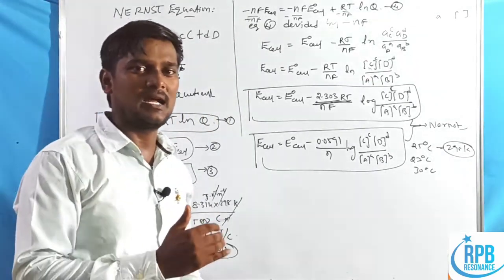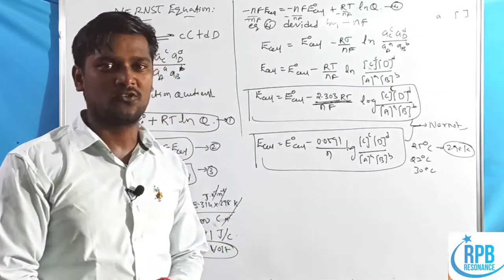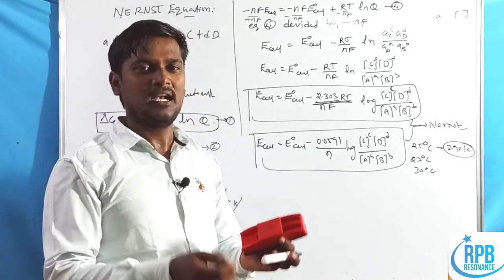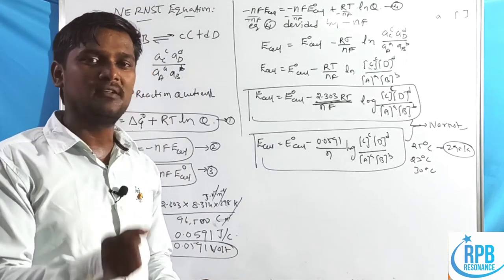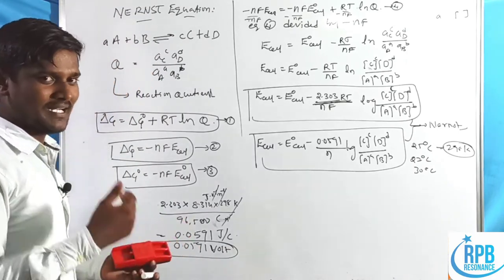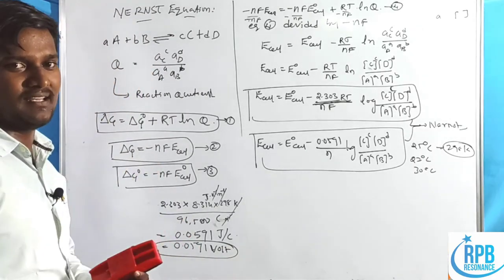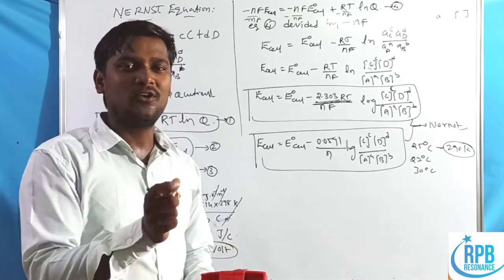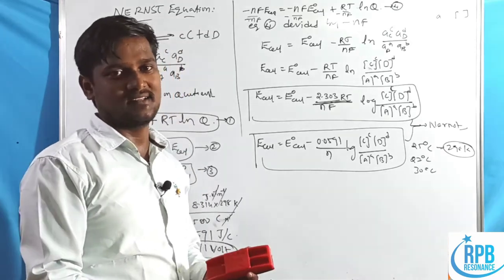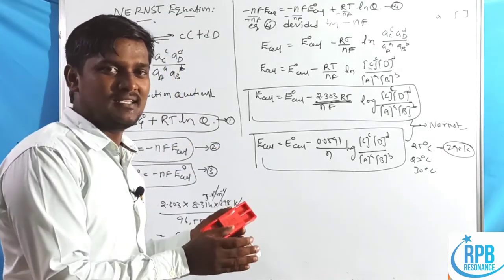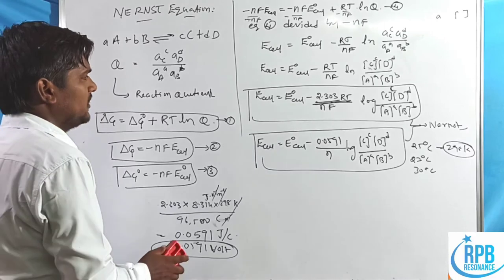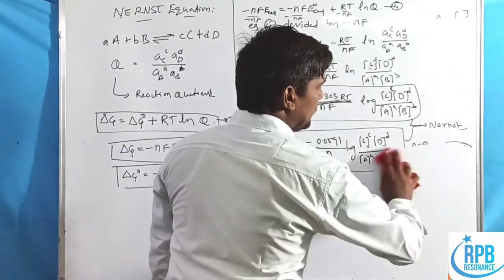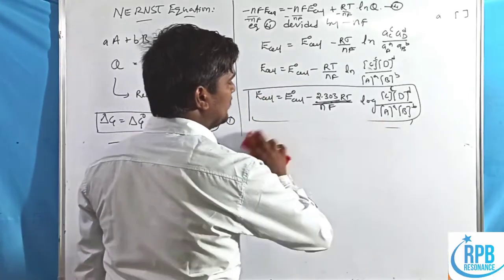This is the final representation of the Nernst equation, which can be applied to different types of electrodes in different electrochemical cells. Now we will apply the Nernst equation to anodic and cathodic cell reactions.